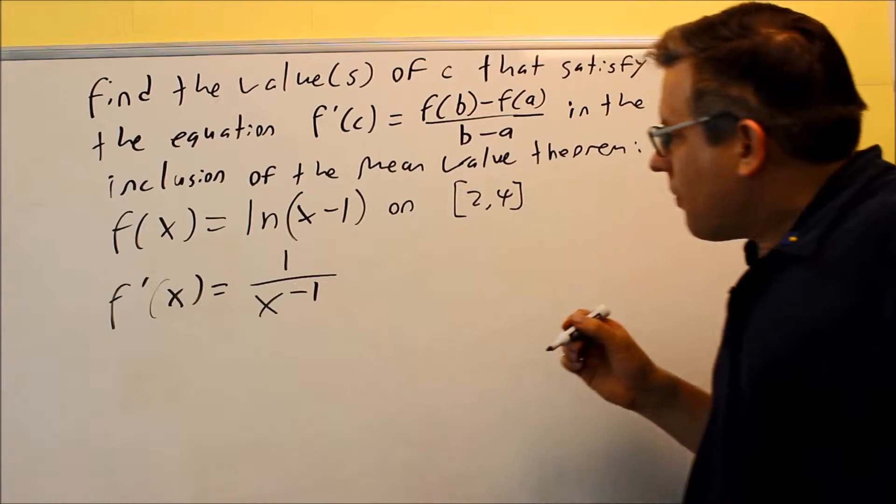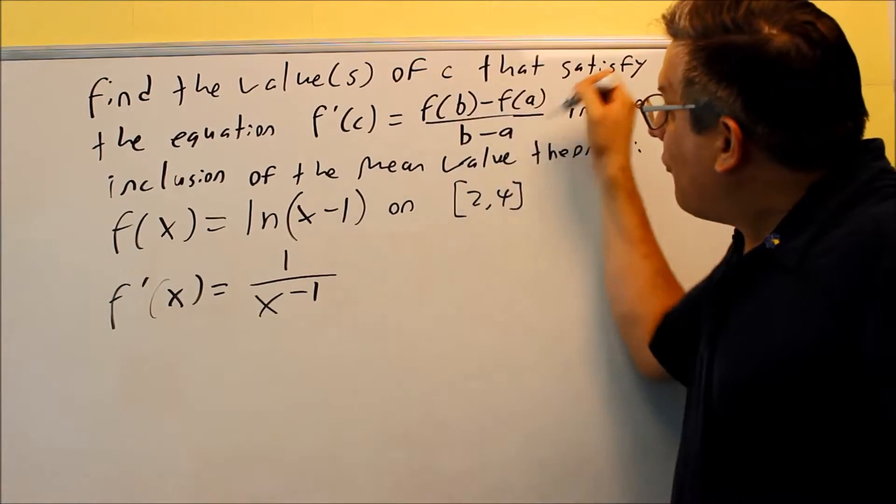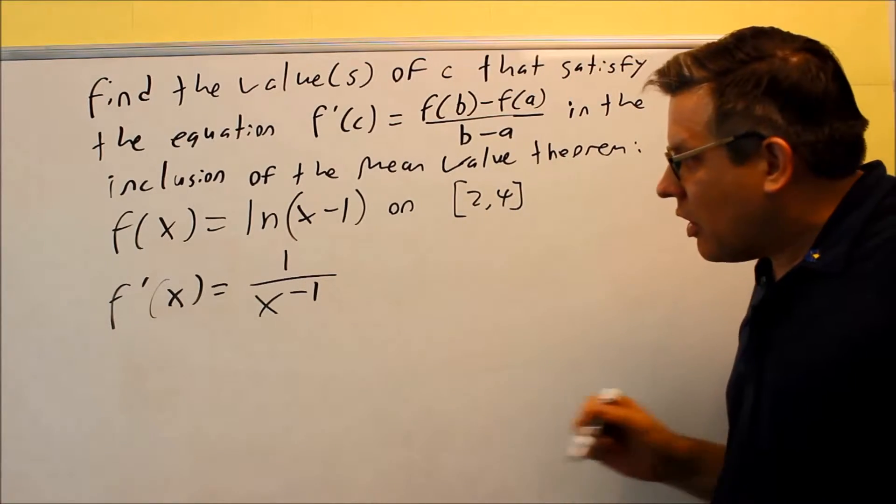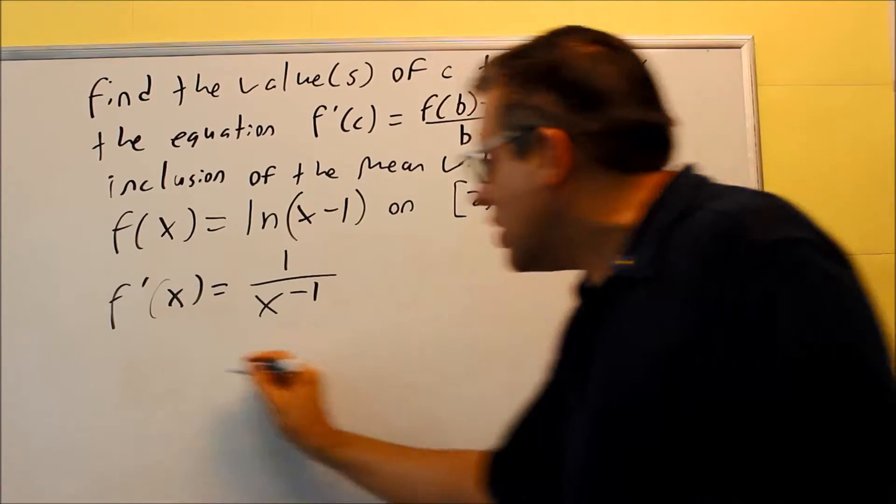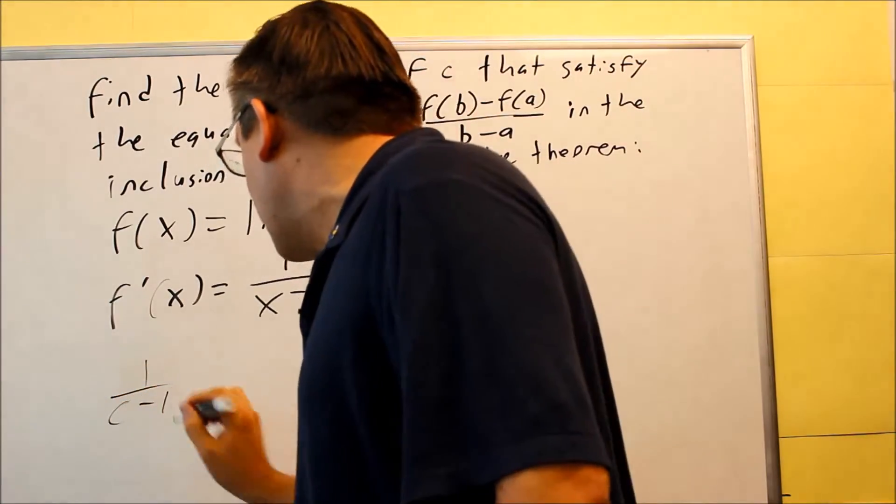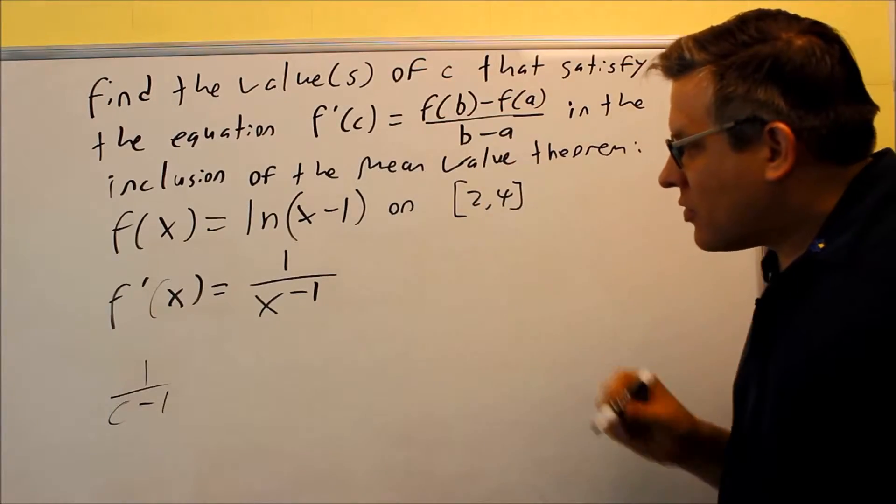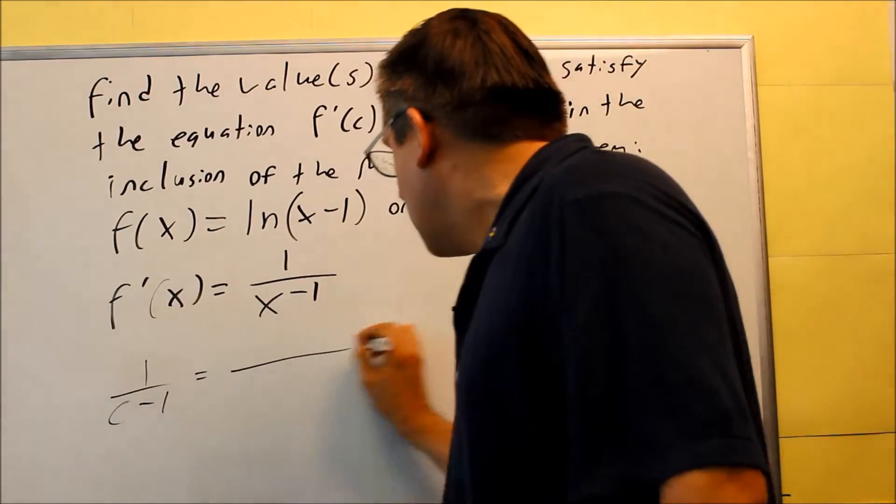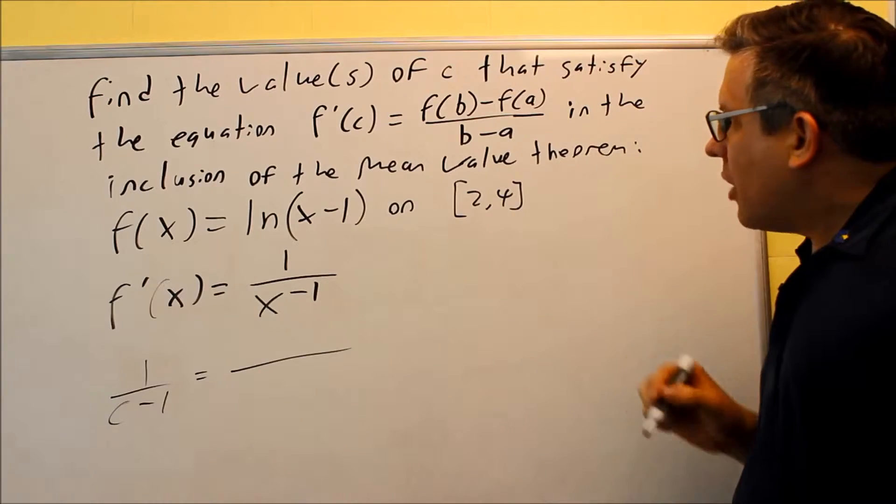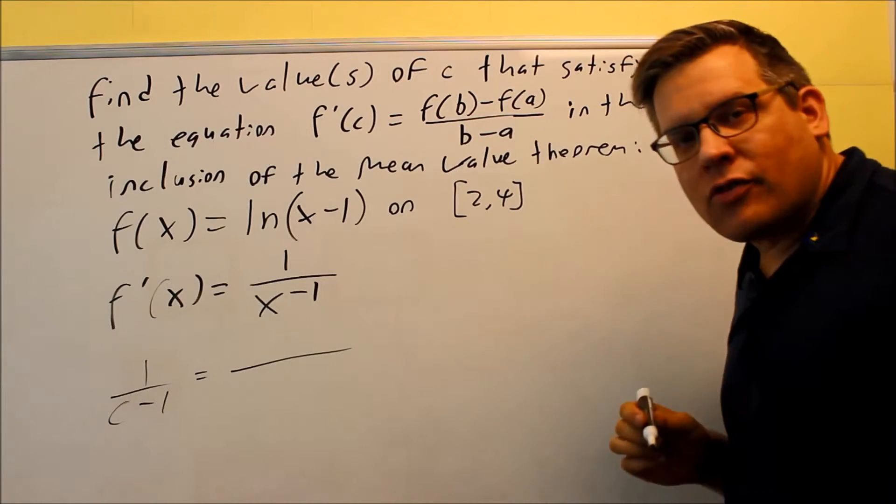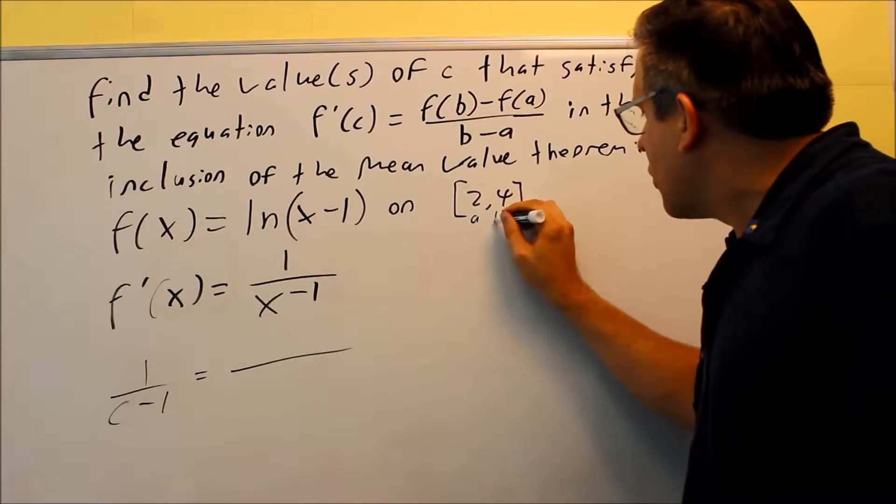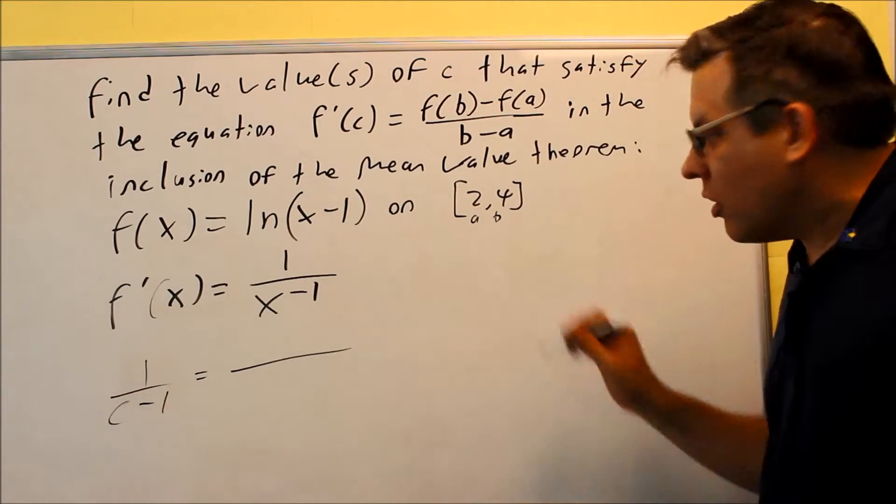The next thing we want to do is find the c that makes this work. First I'll start with f'(c). To do that, I just put in c for x in our derivative. That's f'(c) = 1/(c-1). On the other side, I want to do f(b) - f(a). Let's do those off to the side. Here's our a and b: a is 2 and b is 4.